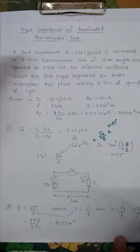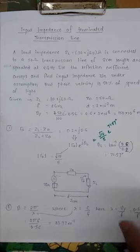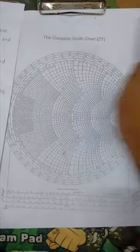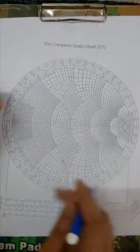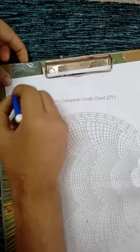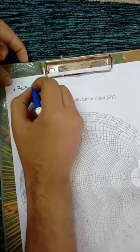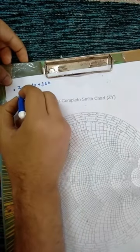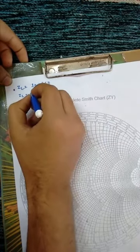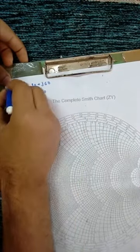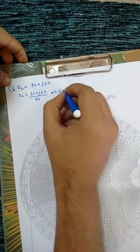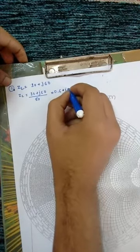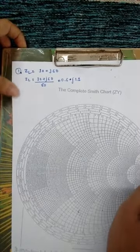In this example we have to solve using the Smith Chart method. I am using a complete ZY Smith Chart. First we have to normalize the load impedance ZL, which is given as 30 + j60. Dividing by Z0 = 50, we get the normalized value: 0.6 + j1.2.